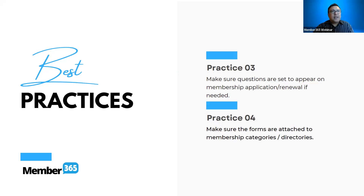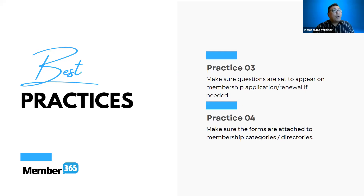Best practice number three — make sure questions are set to appear on the membership application or renewal if needed; those checkbox options should be checked off so those questions are asked during the application and renewal process. Best practice number four — make sure the forms are attached to membership categories and directories. For web forms, make sure the access points are set up correctly, telling the system which contacts need access to that specific web form.